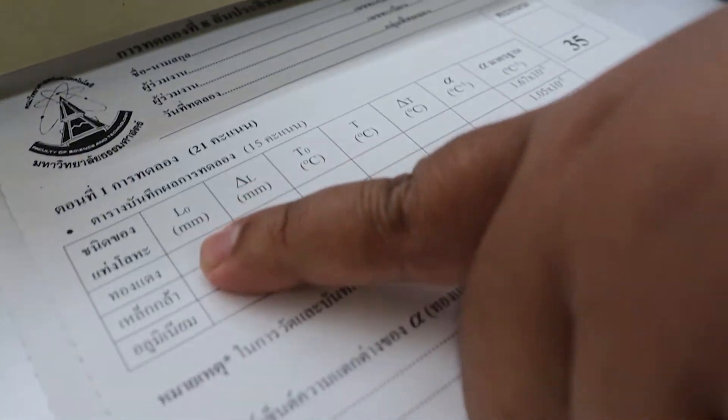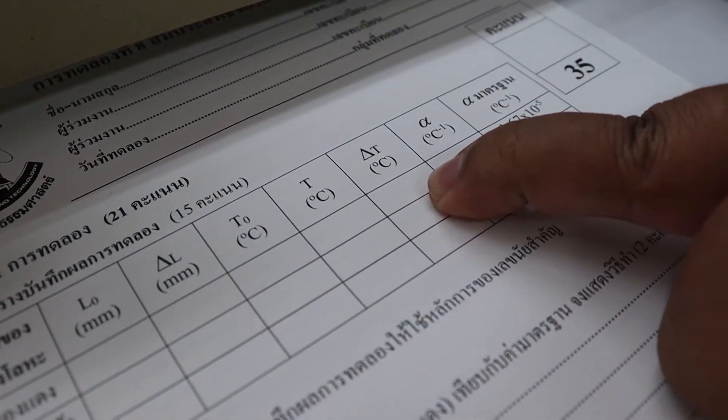Now you know L0, delta L, and delta T, so you can calculate alpha.